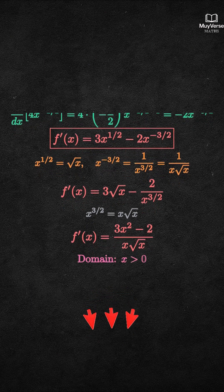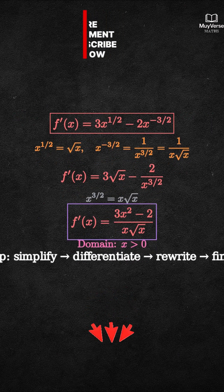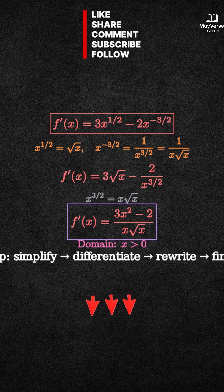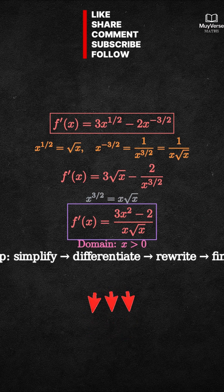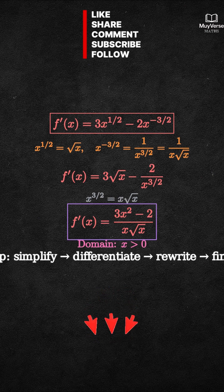Recap: We split the quotient, used exponent rules to simplify, applied the power rule and constant rule, rewrote using radicals, and expressed the derivative as a single fraction. Our final result is f prime of x equals the fraction 3x squared minus 2 over x times square root of x, with x greater than zero.